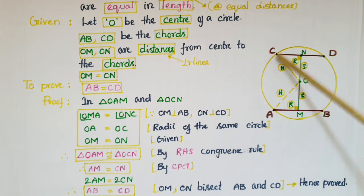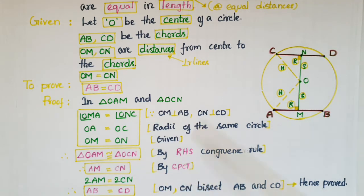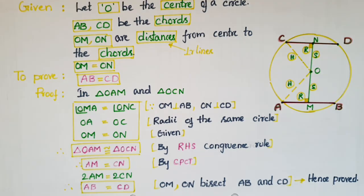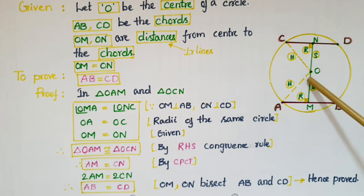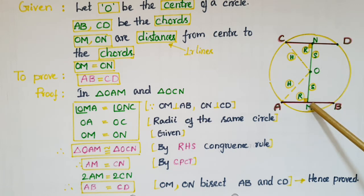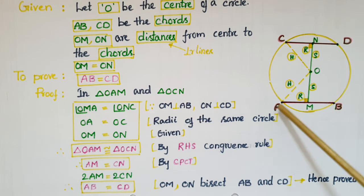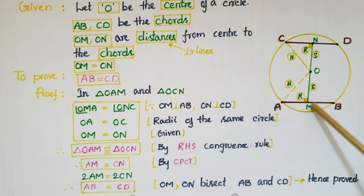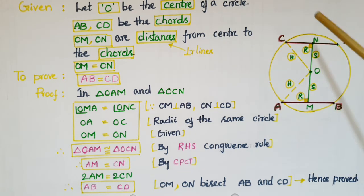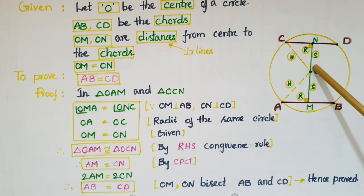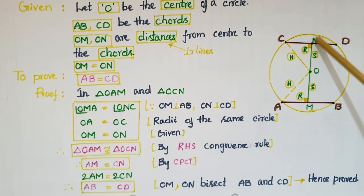So AM is equal to CN by CPCT. And we know that if a perpendicular line from the center of the circle to the chord bisects the chord, so AM is equal to BM, and since CN is also from a perpendicular line, CN is equal to ND.